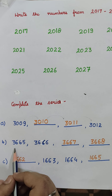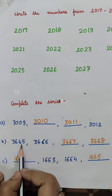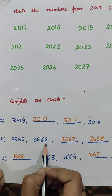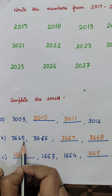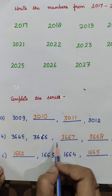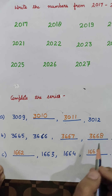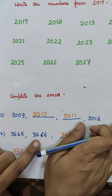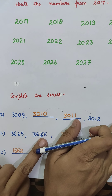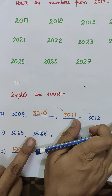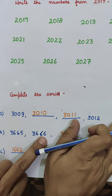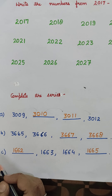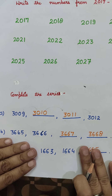The next question: 3665, 3666, ___, ___. We have to fill the next numbers. After 3666, what comes? 3667. And after 3667 comes 3668. So the answer is 3667 and 3668.